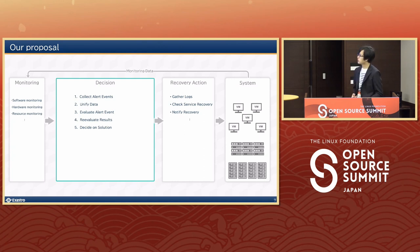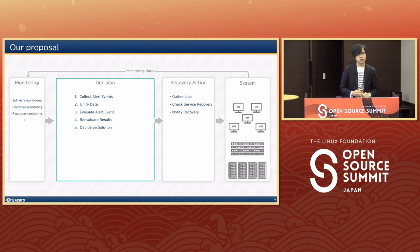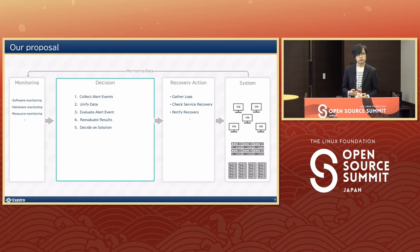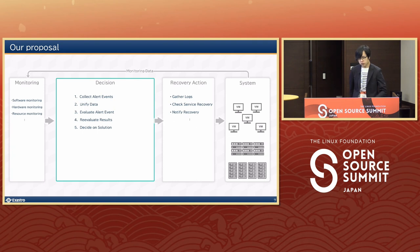Automating the alert and event system sounds easy, but doing so for single alerts and single problems itself wouldn't be that hard. In real life, engineers would have to sort through data, gather event alerts from multiple monitoring applications, and then evaluate the problem to find out what the necessary solution would be. This requires more sophisticated logic: collect alert events from all different monitoring tools, unify the data so we can compare them, evaluate the messages to find the proper solution, reevaluate those results, and finally decide on the final solution. What seems simple as a concept turns out to be more complicated in practice.